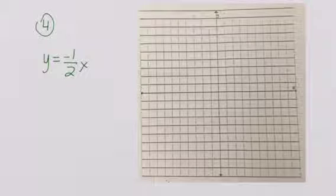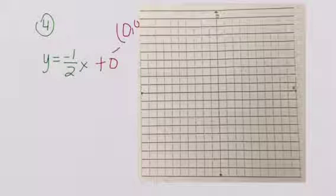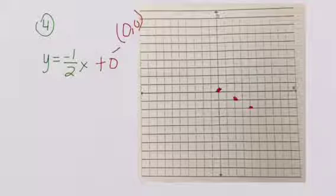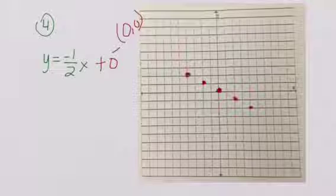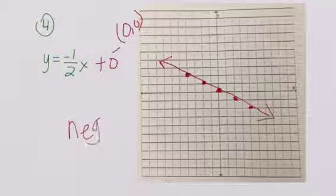When looking for our y-intercept with this equation, we'll notice it's not there. However, we can put plus zero without changing the value of the equation and still get a starting point. So our starting point is zero, zero, and our slope is already in fraction form. We start at the origin, go down one to the right two, then down one to the right two again. Back to our starting point, we do just the opposite: up one to the left two, then up one to the left two. We connect our points, add the arrows, and label the slope as negative.